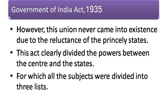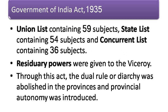This act clearly divided the powers between the centre and the states, for which all the subjects were divided into three lists: union list containing 59 subjects, state list containing 54 subjects, and concurrent list containing 36 subjects. Residuary powers were given to the viceroy.